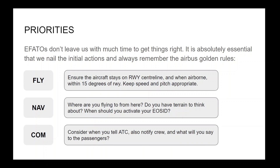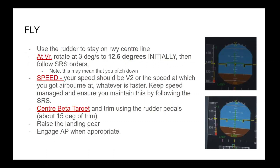For the Fly golden rule: use the rudder to stay on the runway centreline. At VR, rotate at three degrees per second to 12.5 degrees initially, then follow SRS orders — this may mean pitching down. Your speed should be V2 or the speed at which you got airborne, whichever is faster. Keep speed managed and maintain it by following the SRS. Centre the beta target and trim using the rudder pedals — about 15 degrees of trim. Raise the landing gear and engage autopilot when appropriate. Do not fly below V2 speed.